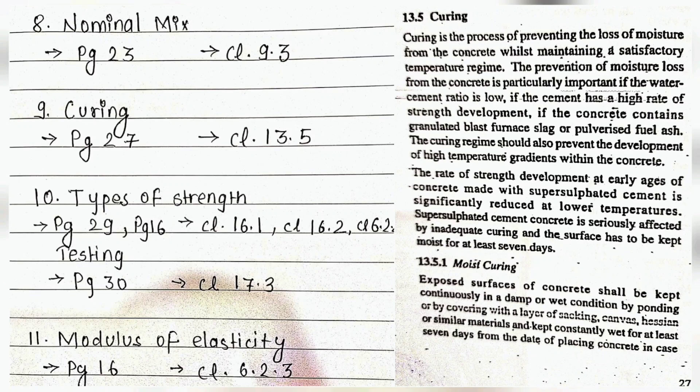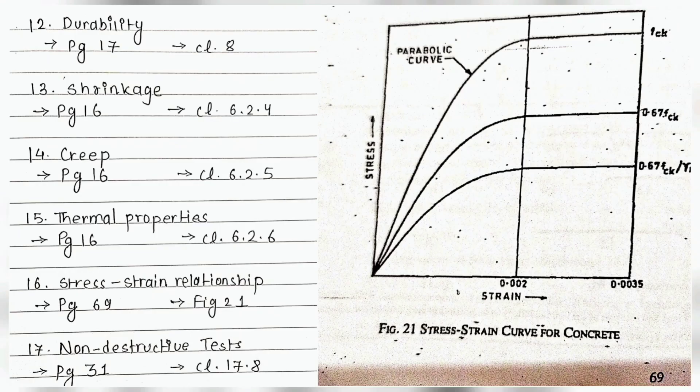Further topics include curing in clause 13.5, types of strength in clauses 16.1 and 16.2, tensile strength in 6.2.2, testing in 17.3, modulus of elasticity in 6.2.3, durability in clause 8, shrinkage in 6.2.4, creep in 6.2.5, thermal properties in 6.2.6, and stress-strain relationship in figure 21 of page 69.